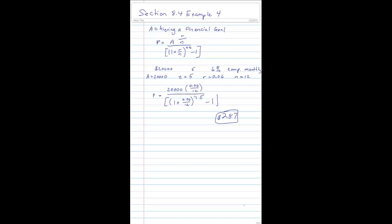The next part of the question says, how much of the $20,000 down payment comes from deposits, and how much comes from interest? Well, if I put away $287 per month for 5 years,